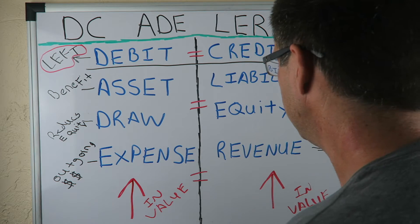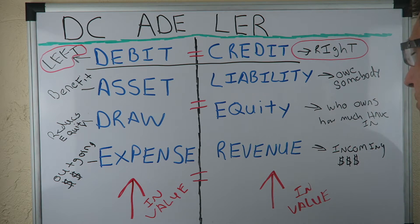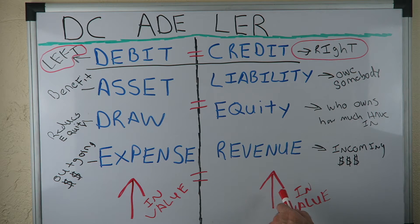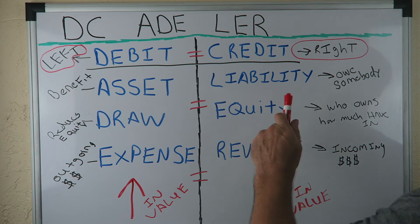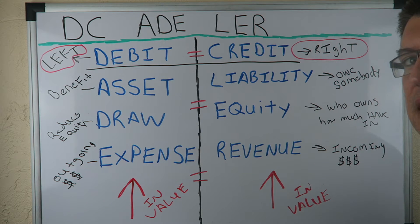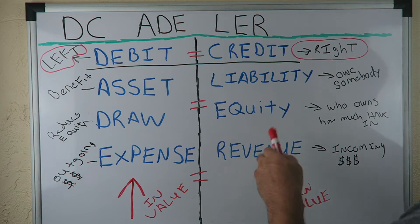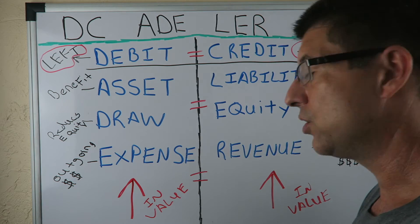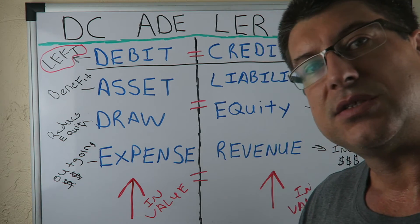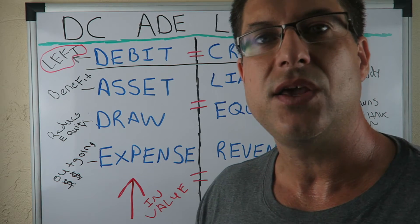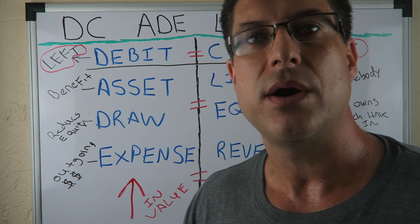Now, if you have a liability increasing in value, you credit it. If you have equity increasing in value, you credit it. If you have revenue increasing in value, you credit it. That's the deal — that's how you know where to put it.